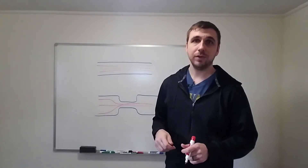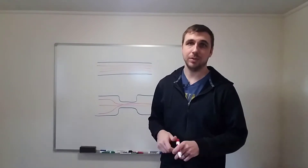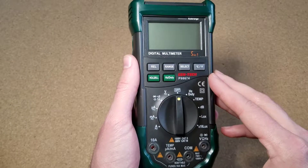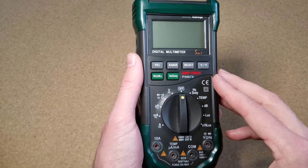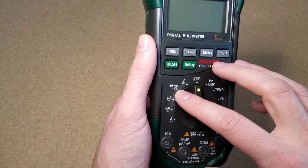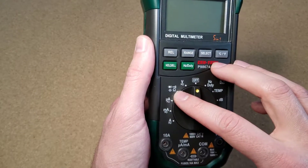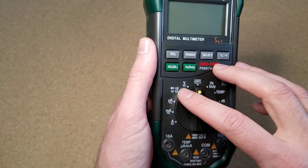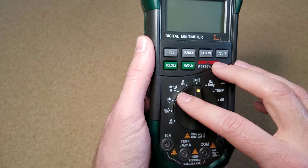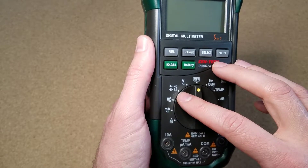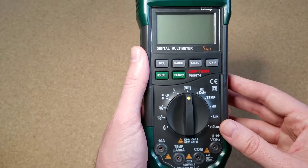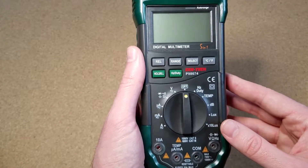So now let's figure out how to set up your meter to measure resistance. Resistance is measured in ohms, and the symbol for ohms is this omega symbol right here that looks like a horseshoe. This is the setting we want to set the meter to in order to measure resistance, and since this is an auto-ranging meter, I don't have to worry about setting the range.